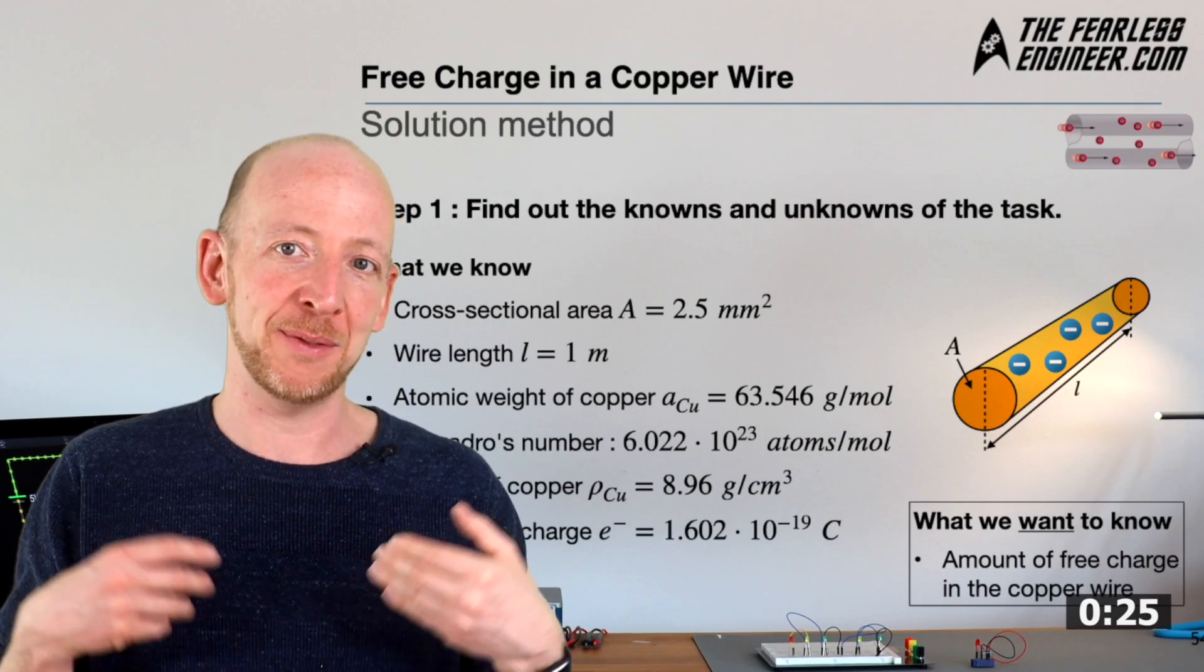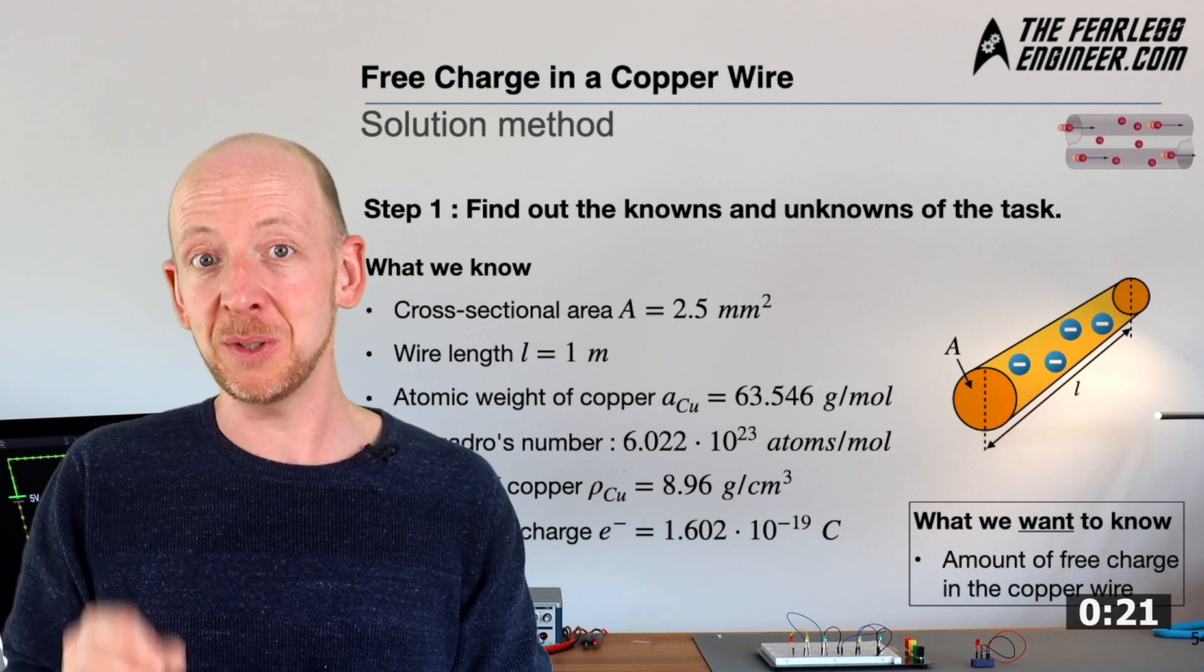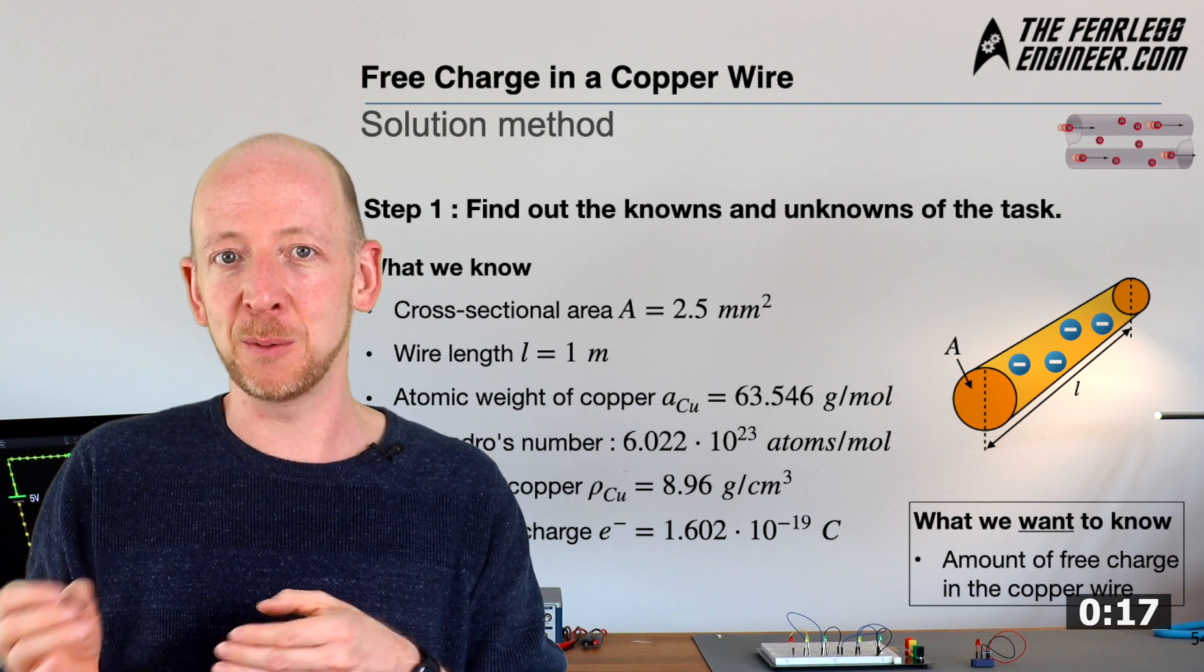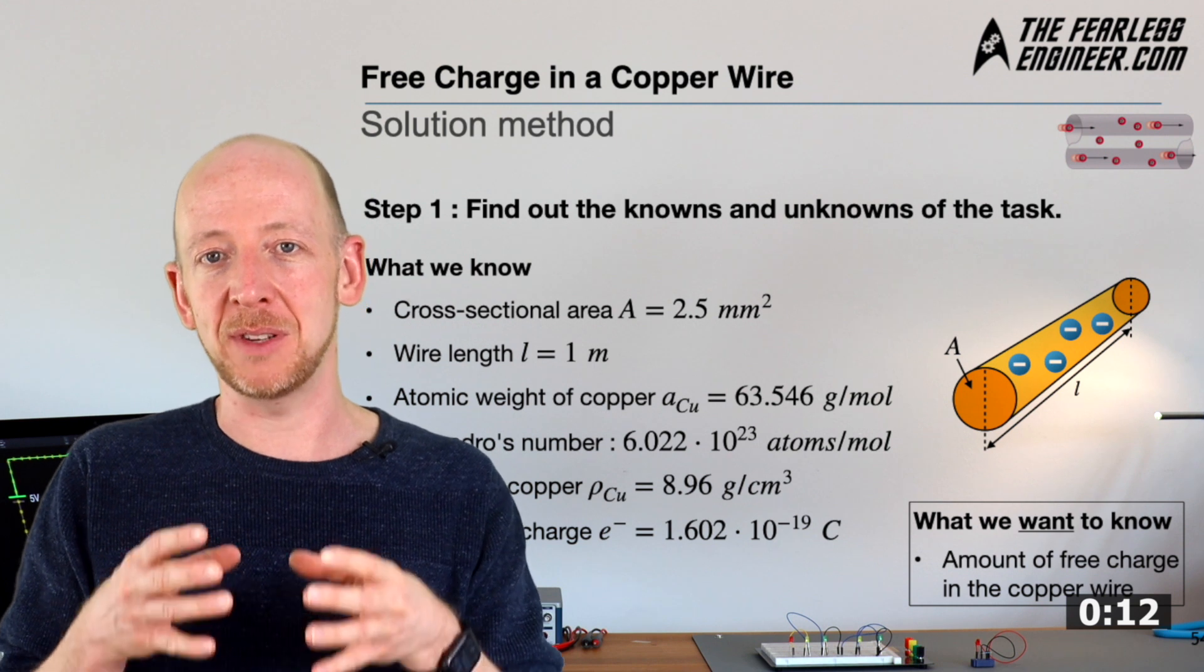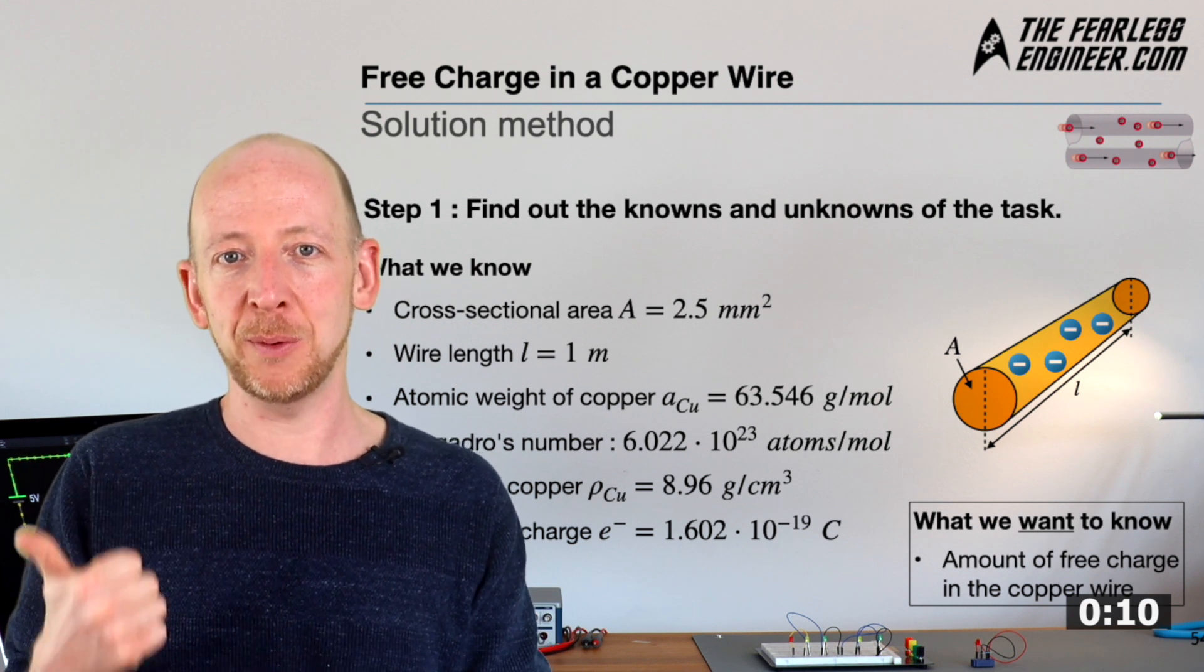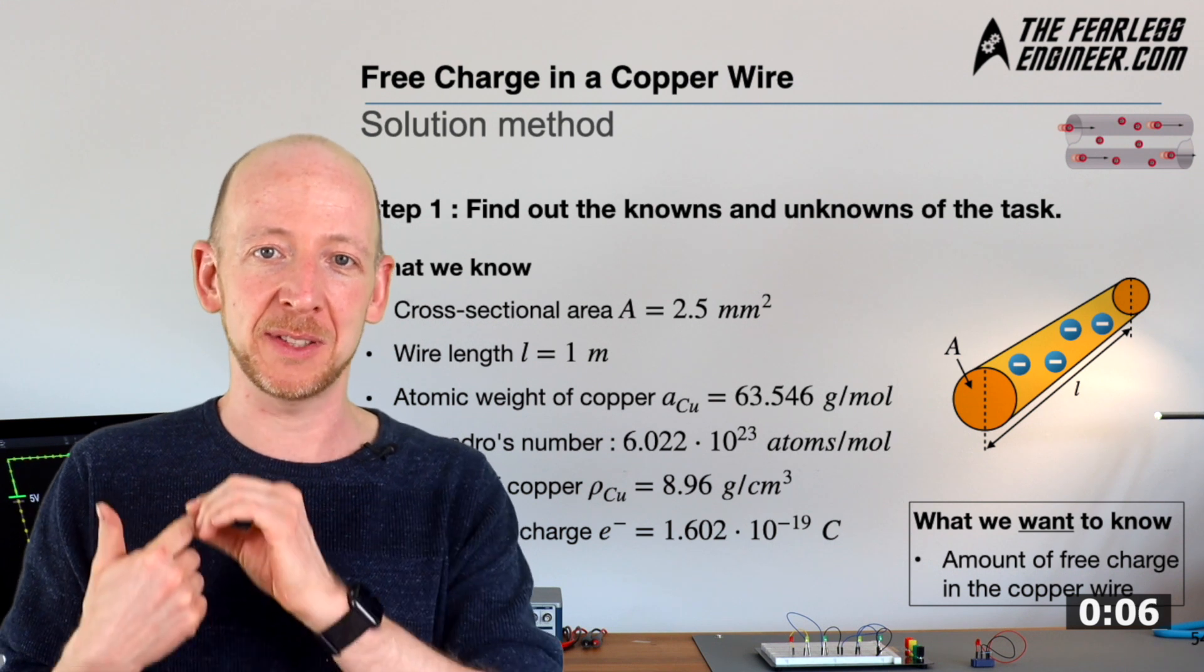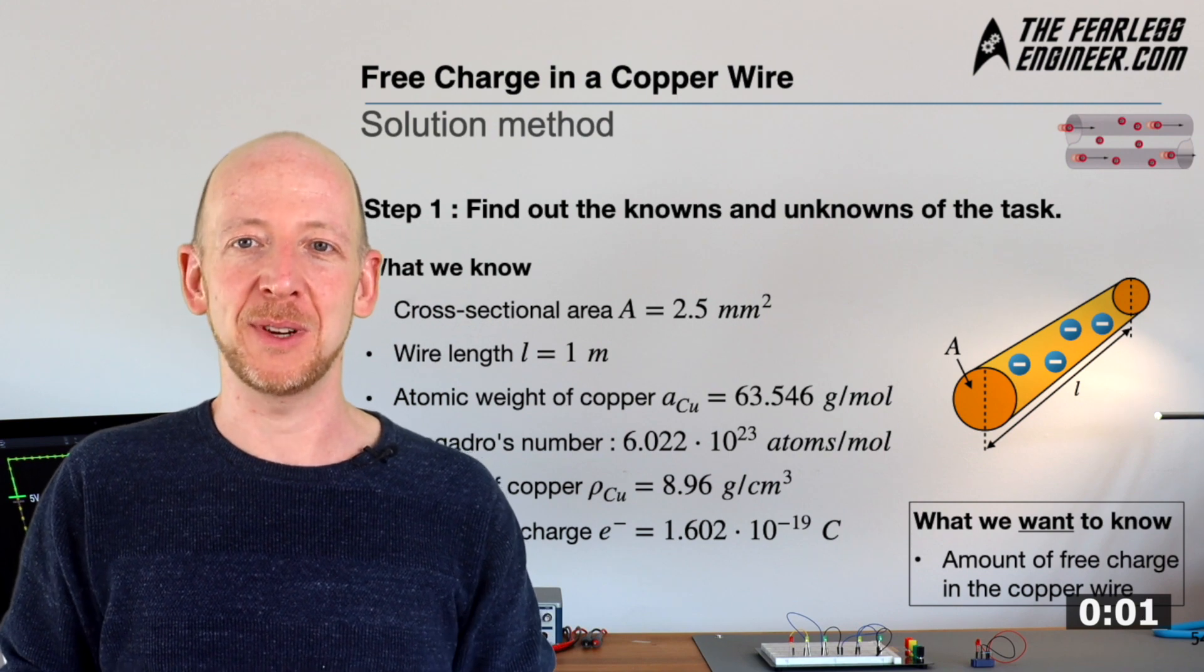In the previous tutorial we have already figured out the number of free electrons in a copper coin, but the difference to our new task was that we had been given the weight of the coin which we don't have now. So instead of the weight we now have to use the cable volume as well as the density of copper to arrive at the number of charges. And in the first step we will now calculate the number of atoms in one cubic meter of copper and in the second step we will transfer the result to the piece of wire using a simple rule of three.